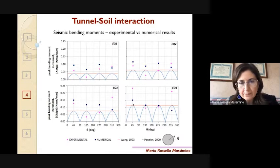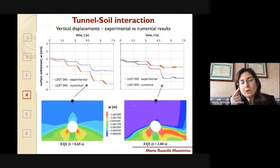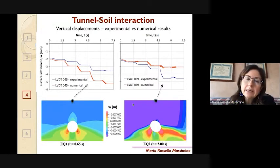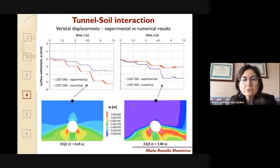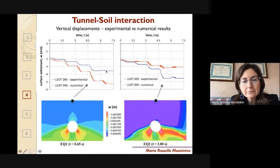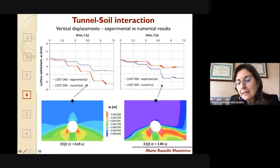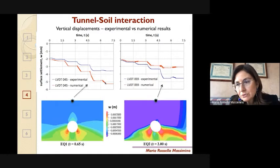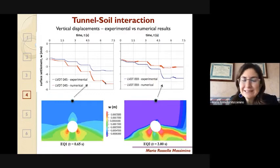We also compared experimental and numerical results in terms of bending moments on the tunnel. In that case we compared the experimental results not only with our numerical results but also with the results from the elastic SSI solutions by Wang and Penzien — and once more a good comparison was obtained, apart from some cases where the strain gauges may not have worked well. By means of our FEM modeling we can also predict settlements at the soil surface and compare our values with the experimental ones, capturing different aspects of the tunnel-soil system behavior.